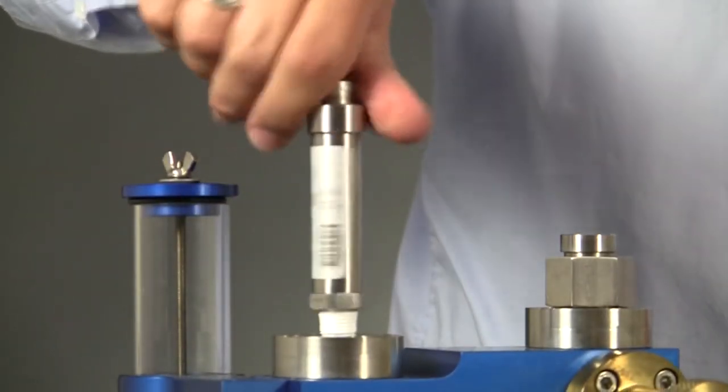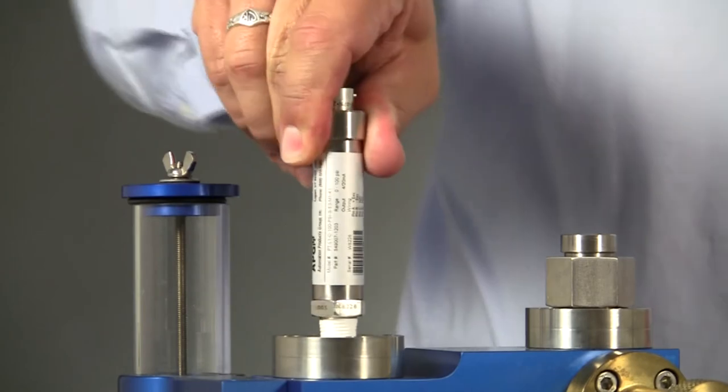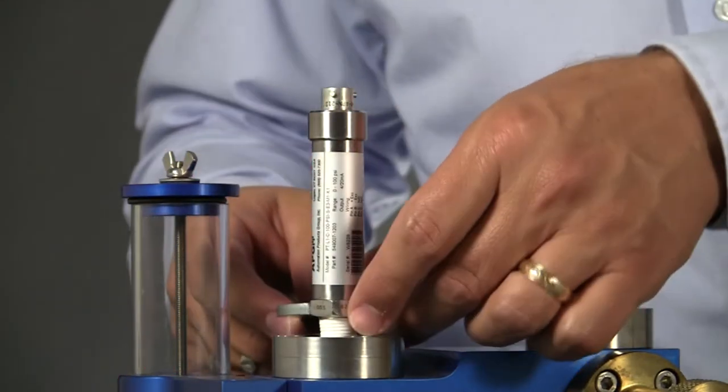When you're sealing the threads, you'll want to wrap the tape in the opposite direction of the thread. This is to avoid unraveling the tape as you screw in the sensor.